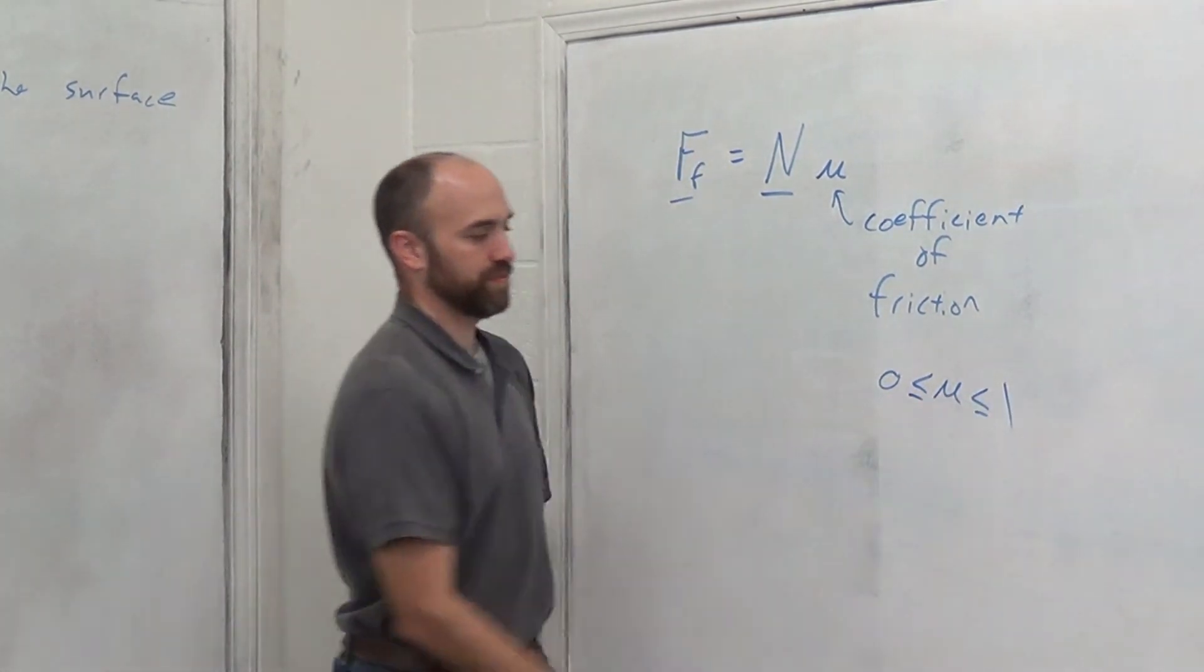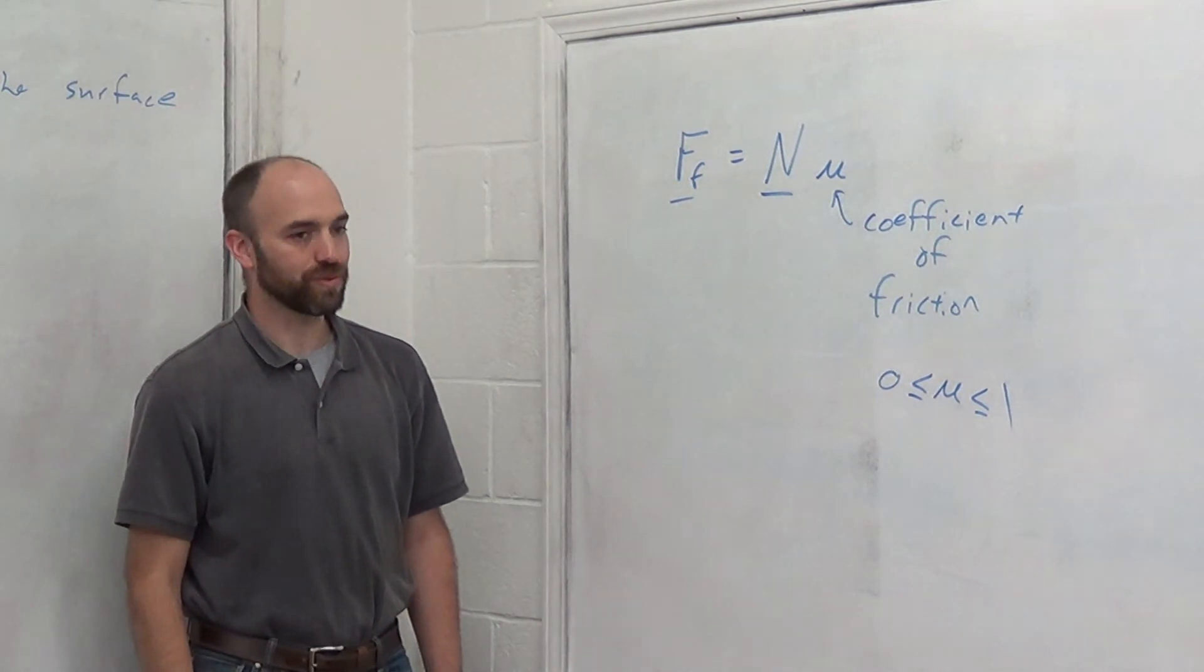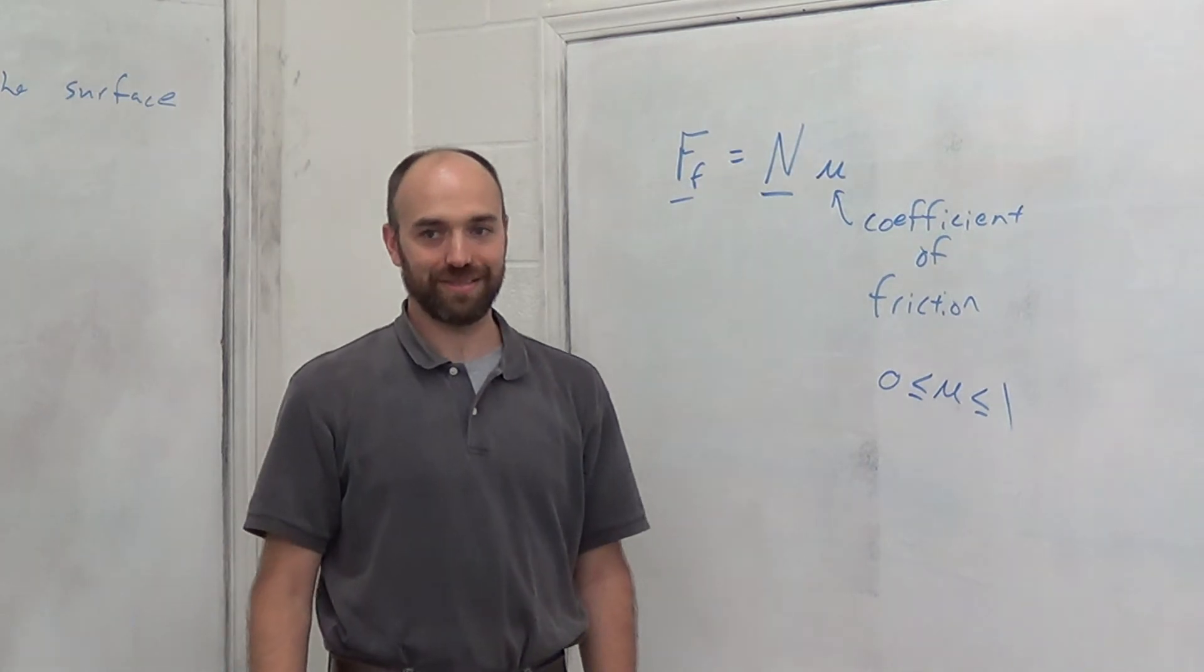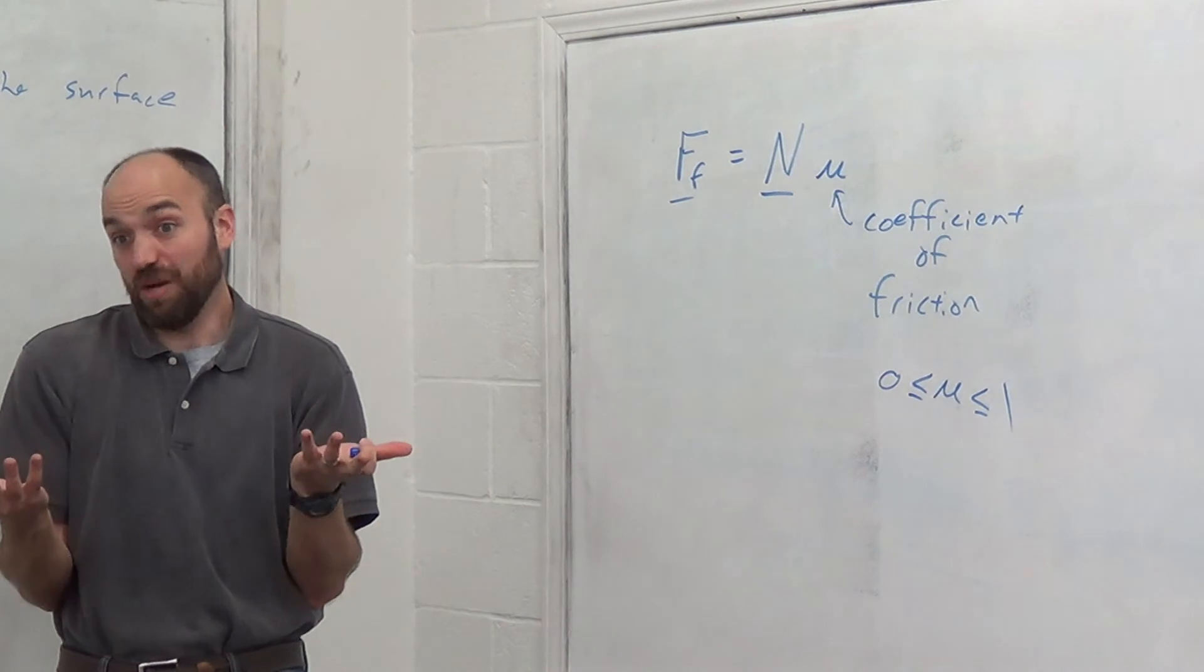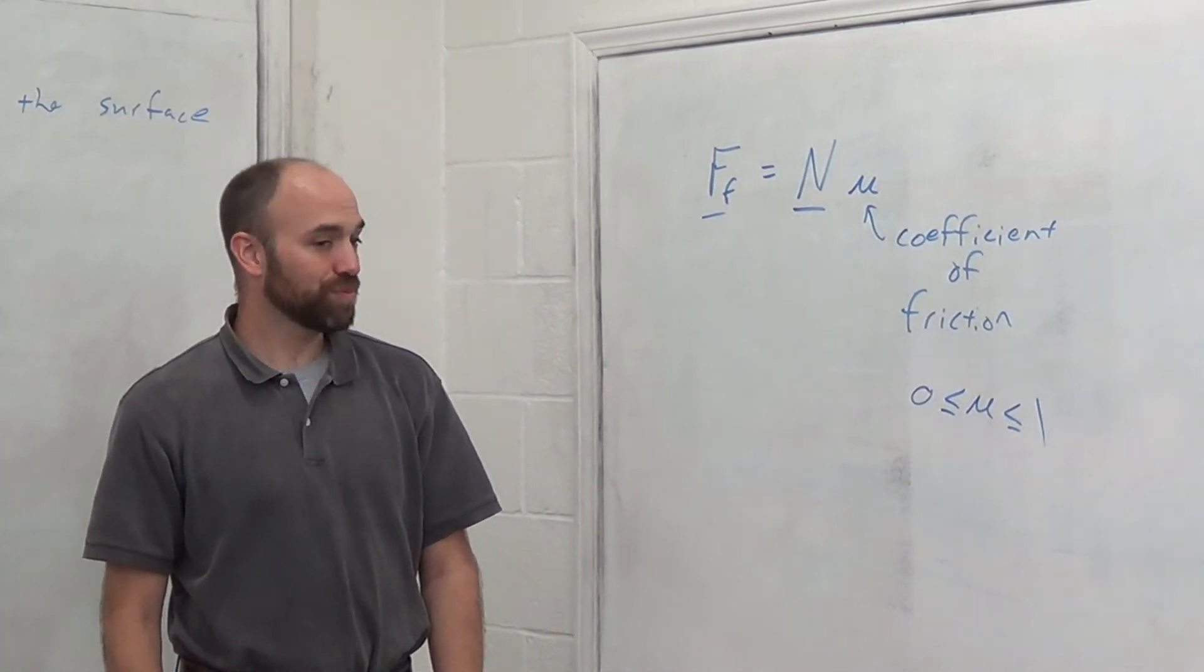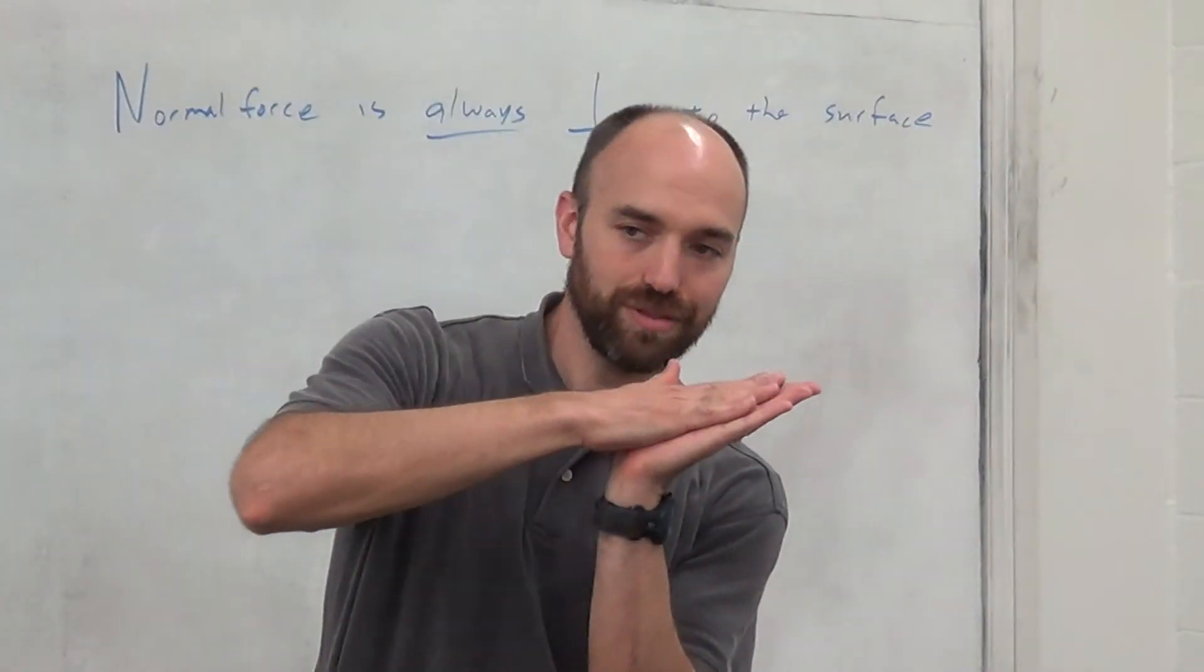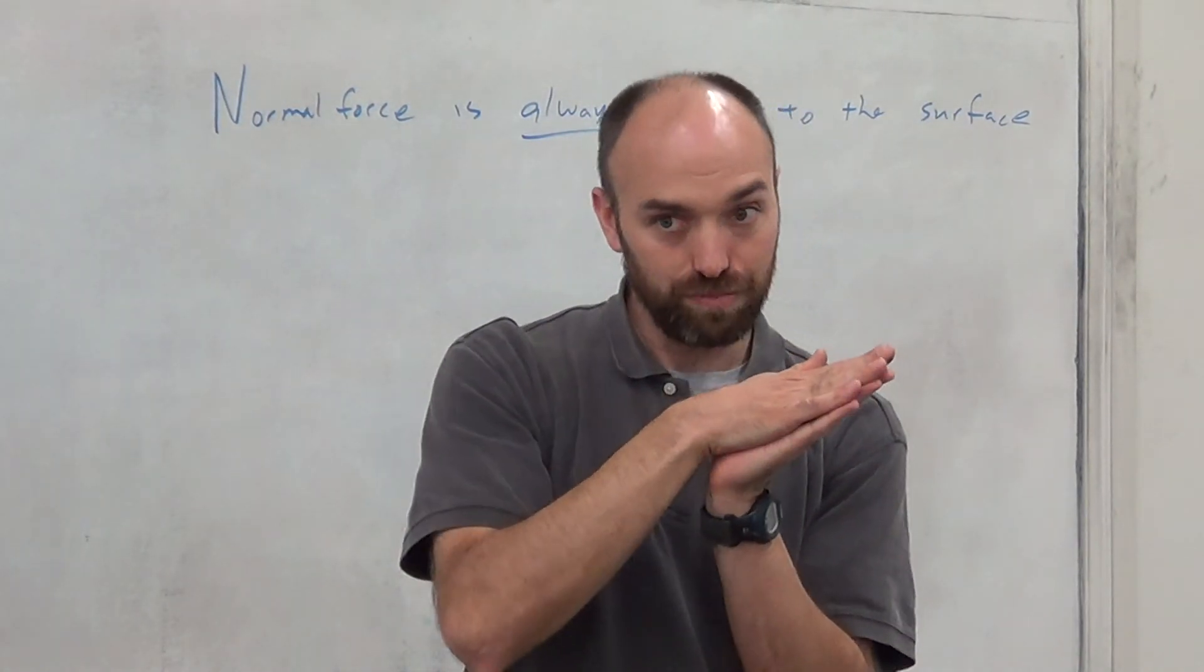If you calculate mu and you get an answer of 1.5, what do you know? You messed up. It's wrong. Do it again. Mu is like sign or cosine, it's just a number between zero and one. What determines mu? The surfaces. This determines how much friction there's going to be. If you've got Teflon on Teflon, mu is going to be really small. If you've got sandpaper on sandpaper, mu is going to be really high.